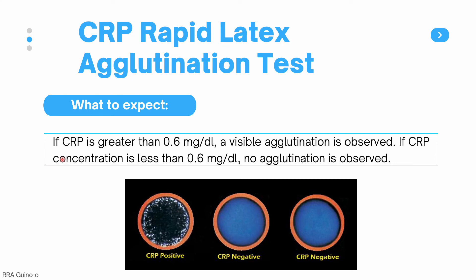In the CRP latex agglutination test, if CRP is greater than 0.6 mg per deciliter (6 mg per liter), visible agglutination is observed. If CRP is less than 0.6 mg per deciliter, no agglutination is observed. On the black glass slide, a positive result shows visible agglutination with the naked eye, while negative results show only the latex suspension without any aggregates.